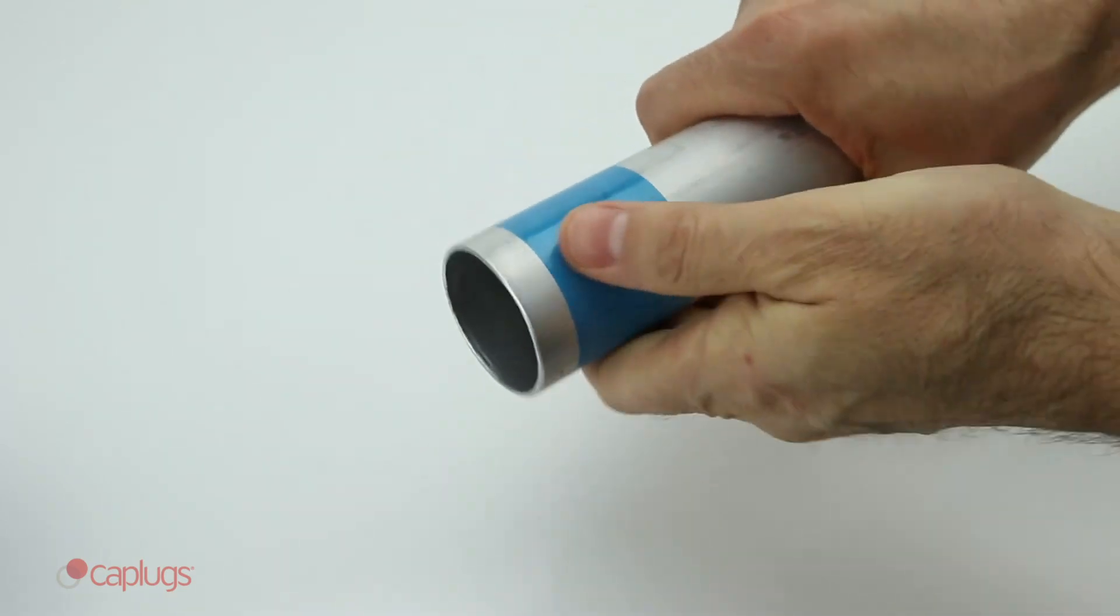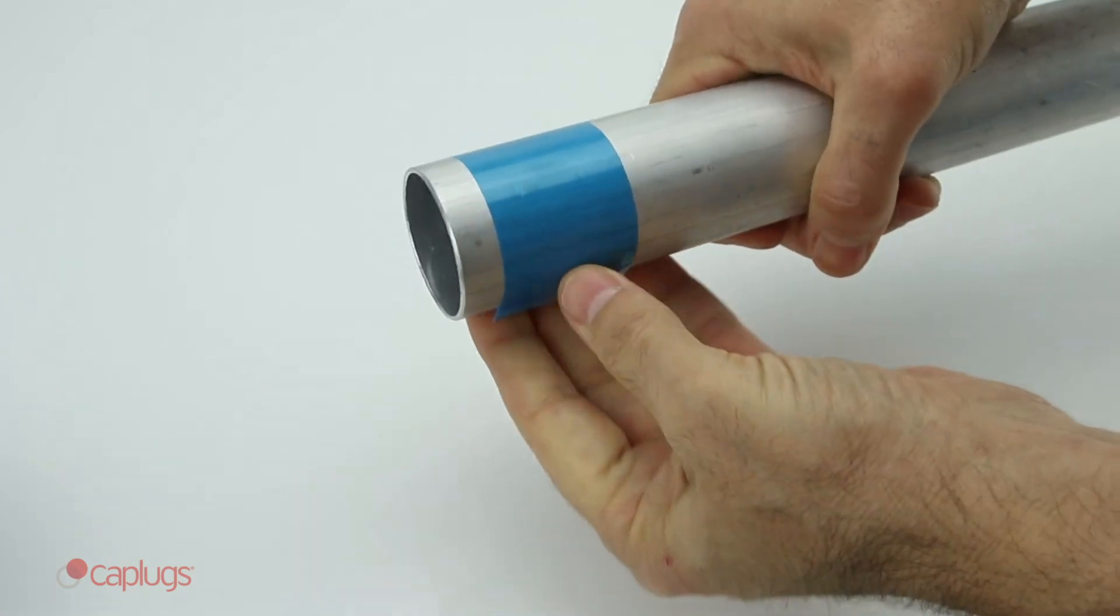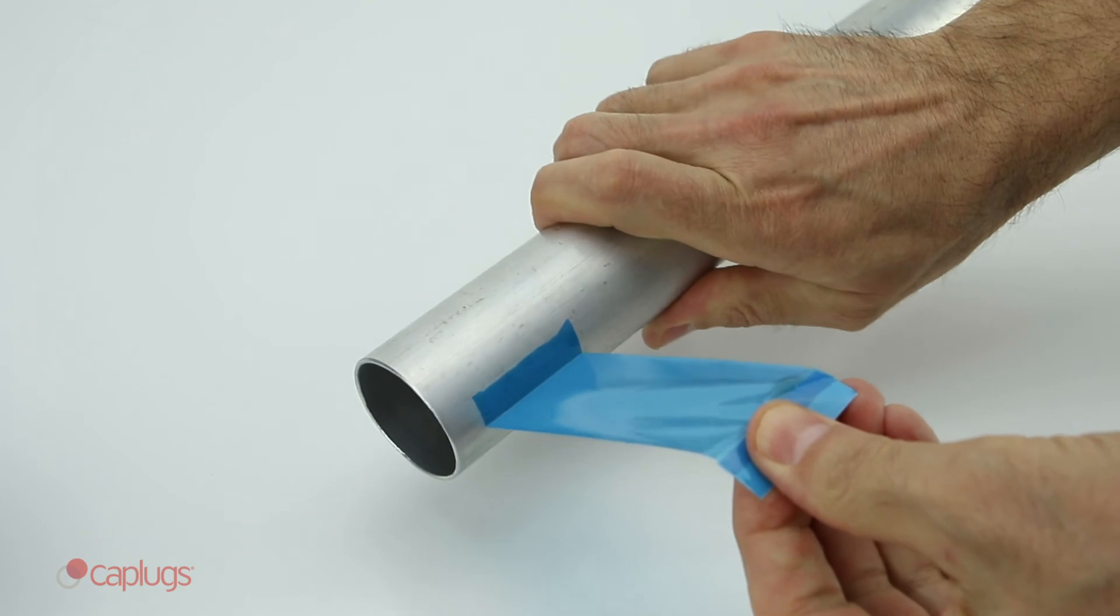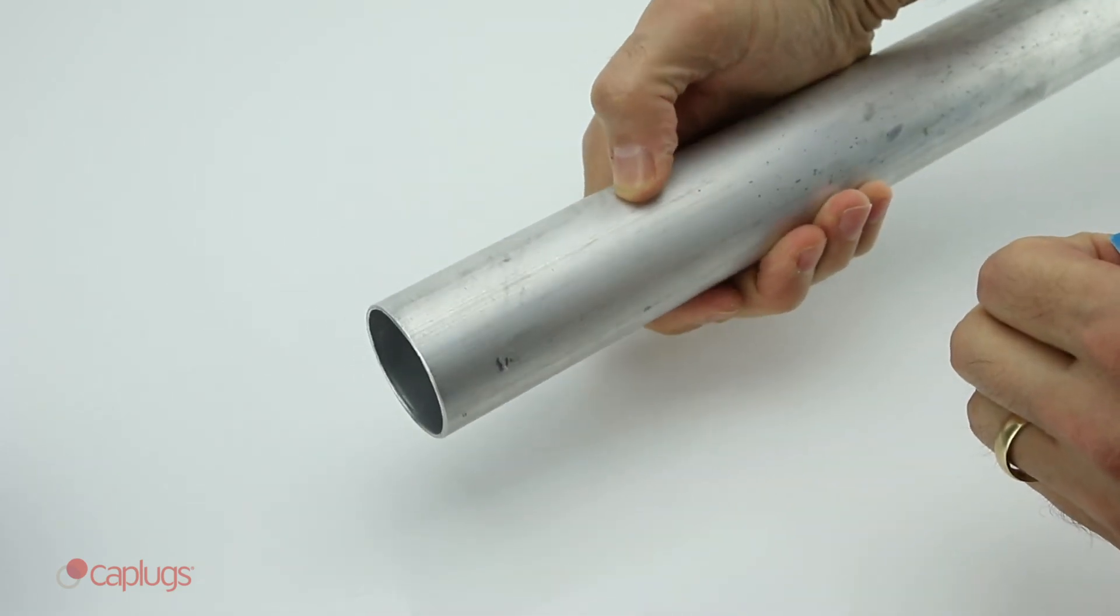This tape is an industry standard for powder coating, but it can also be used for e-coating and anodizing. The silicone adhesive from the tape does not leave any residue after removal.